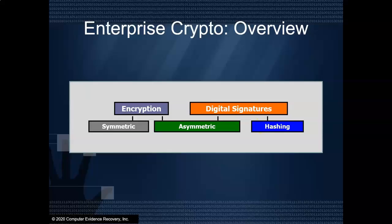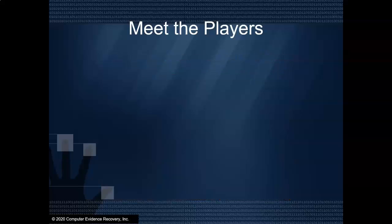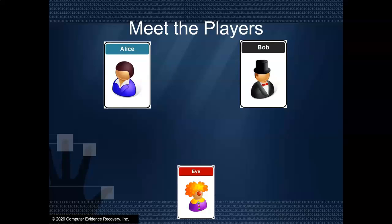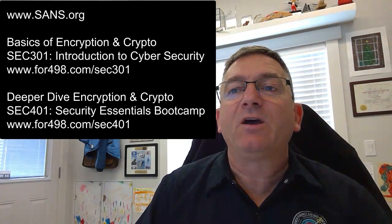In order to go forward, we would be remiss if we didn't mention the players — some of the players. Ron Rivest, Adi Shamir, and Leonard Adleman — Rivest, Shamir, Adleman: RSA. A very common encryption algorithm. But really what we mean by meeting the players is the people you've heard of if you've ever heard an encryption talk: Alice, Bob, and Evil Eve. These players were created by Rivest, Shamir, and Adleman to best explain encryption to the masses. As we go forward, we're going to use these players to better explain what is happening when encryption is happening.